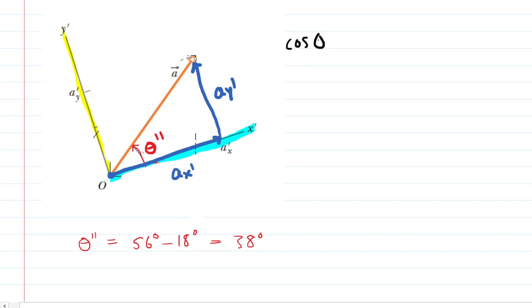We have the cosine of theta double prime equals the side that is adjacent, which is A X prime, over the hypotenuse. Notice the hypotenuse hasn't changed, that still is A. So now all you need to do is plug in the new angle of 38 degrees, put in the original magnitude of 17 meters, multiply both sides by 17, so you'll have 17 cosine of 38, which turns out to be about 13.4 meters. That's going to equal A X prime. That's the correct answer to part C.